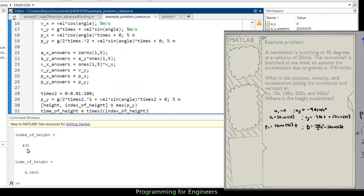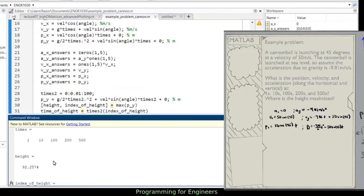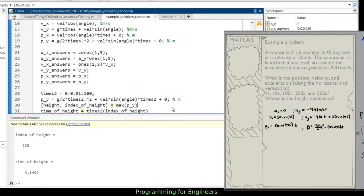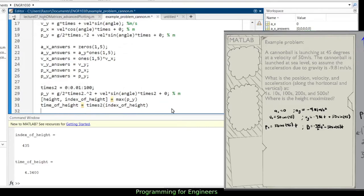And the time of height would be times2 of index of height, right? Because these are correlated, we have the times that correspond with these heights. So I need to find at what point the height is maximized and I can plug that into times2, and that will give me the time at which it's reached the maximum height. So if I run this, the index of height I don't super care about, but height is 92.2574. That's the height that it's maximized. And the time of height is 4.34 seconds. So at 4.34 seconds approximately it's reached the top of its trajectory.